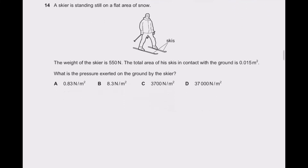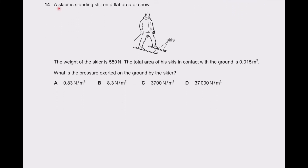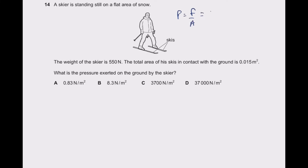Question 14: a skier is standing still on a flat area of snow. The weight of the person is 550 N and the total ski area is also given. Pressure equals force divided by area: 550 divided by 0.015 gives approximately 36,667 N/m², which is near option D.